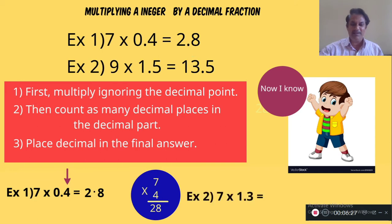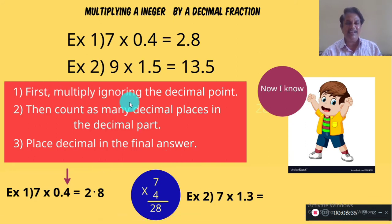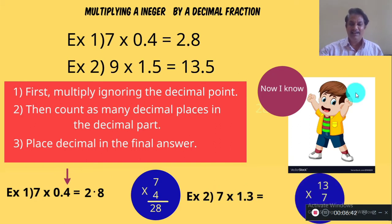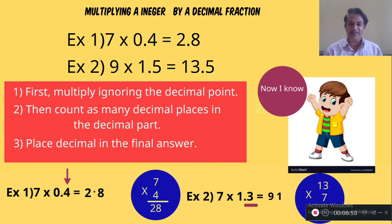Observe the second example: 7 into 1.3. First, multiply ignoring the decimal point — 7 into 13 gives 91. Now place the point: how many decimal places are in the decimal part? There is one decimal place. So in the answer, there should be one decimal place. The answer is 9.1.